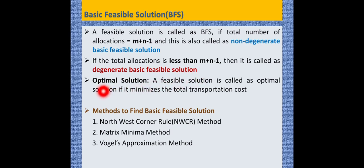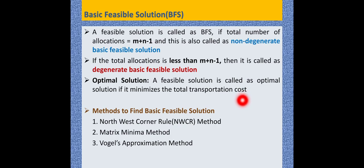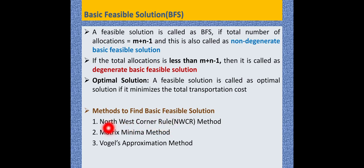There is also an optimal solution. A feasible solution is called an optimal solution if it minimizes the total transportation cost. The methods of finding a basic feasible solution are: Northwest Corner Rule (NWCR), Matrix Minima Method, also called Least Cost Entry Method, and Vogel's Approximation Method.